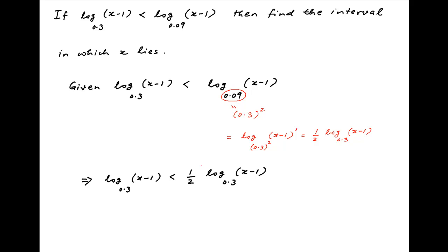This implies that half of log of (x minus 1) to the base 0.3 is less than 0, or in other words, log of (x minus 1) to the base 0.3 is less than 0.